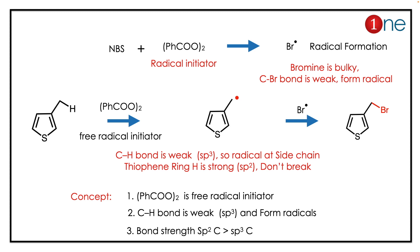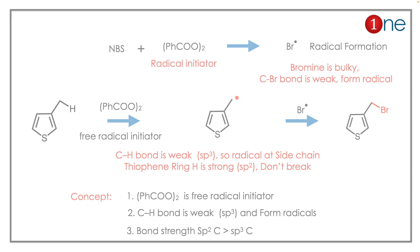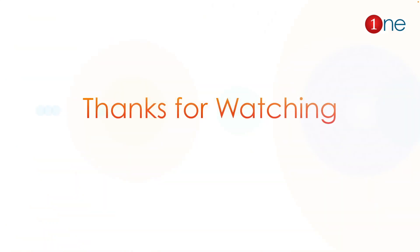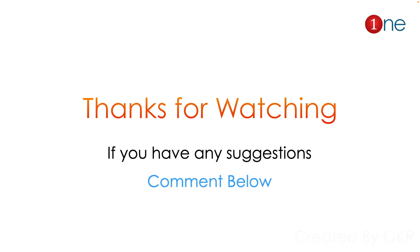The key concepts here: peroxide is always a free radical initiator; free radicals always form at the weak C-H bond; and the bond strength of sp2 carbon is higher than sp3, so radicals do not form on the ring. That's all from this video.